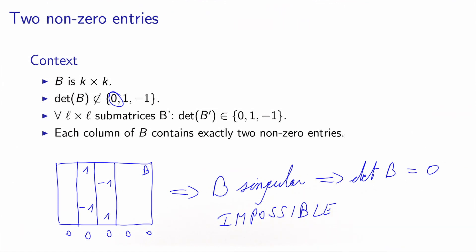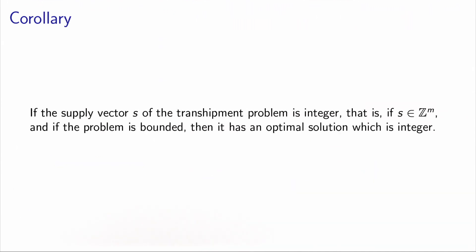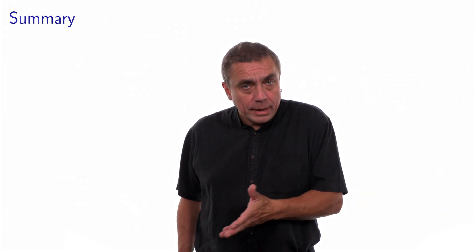Therefore, we conclude that the matrix A is totally unimodular. As an immediate corollary, if the supply vector S of the transshipment problem is integer, then every basic solution is integer as well, because of the total unimodularity of the matrix. If the problem is bounded, its optimal feasible basic solution will be integer. This means that if supply and demand are integer, the optimal solution, if it exists, will be integer — you will not have to break trucks into pieces. This is obtained without imposing any explicit integrality constraint; it follows directly from the property of the matrix.